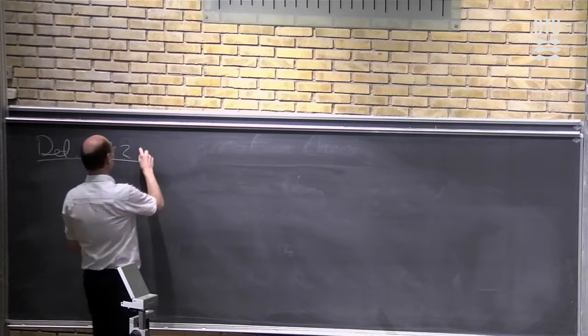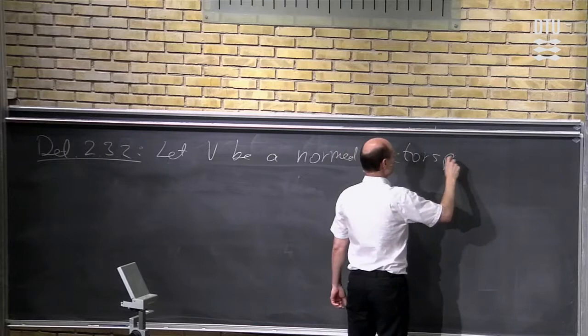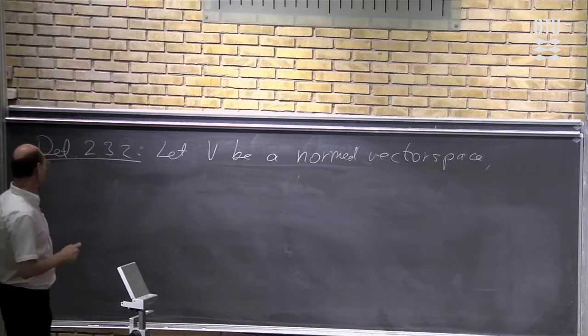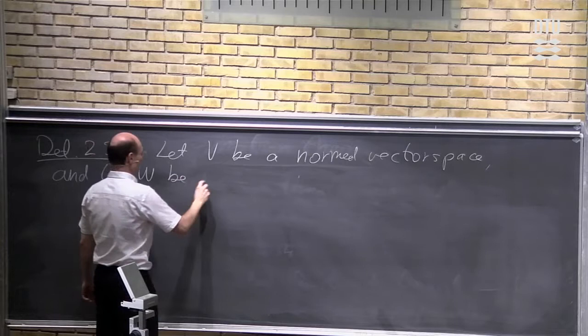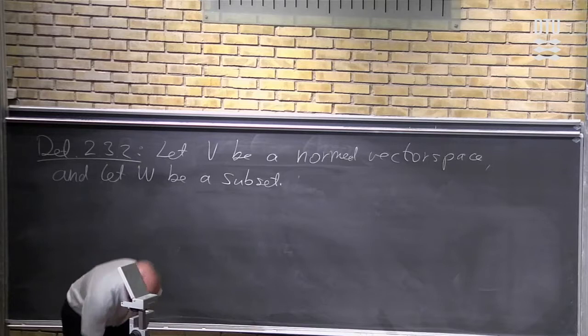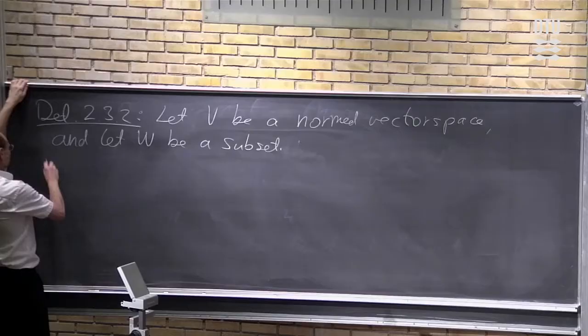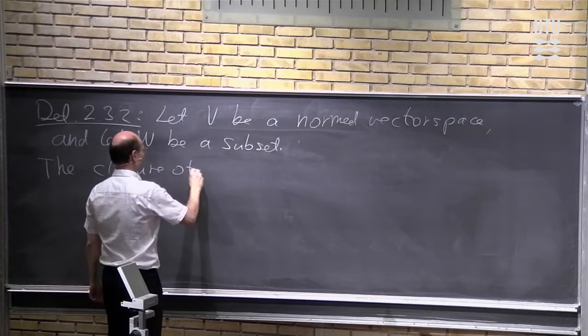We start with a normed vector space, and let's take a subset that we will denote by W. Observe that we do not ask for this to be a subspace — it is just enough that it is a subset. It does not need to be a vector space by itself.